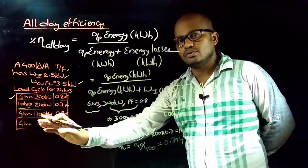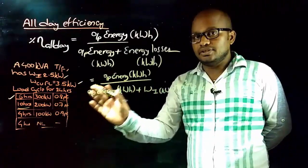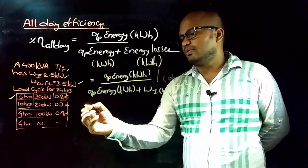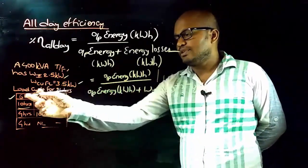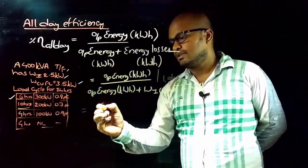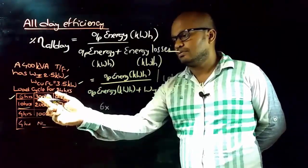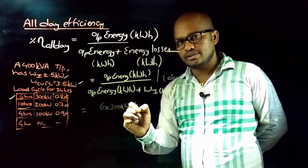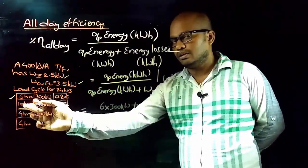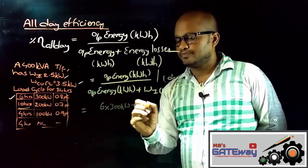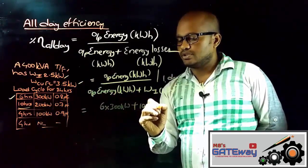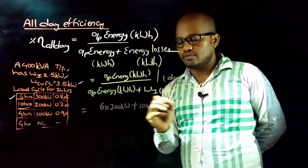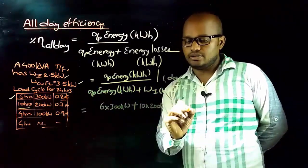For the next four hours there is no loading, so there is no need to find x. We are finding all-day efficiency for one full day. Output energy for the first 6 hours is 6 × 300 kW, plus output energy for the next 10 hours is 10 × 200 kW, plus output energy for the next 4 hours is 4 × 100 kW.